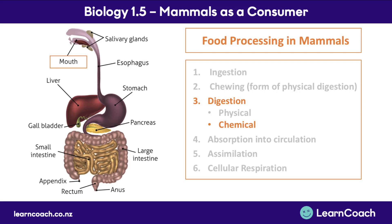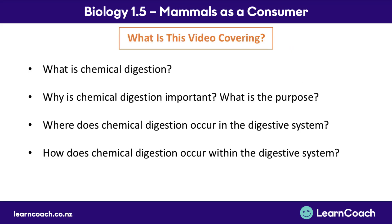These locations are the mouth, the stomach, the small intestine, the salivary glands, the pancreas, and the gallbladder. In this video we're going to be covering the what, why, where, and how of chemical digestion — four important questions you should be able to answer and explain by the end of this video.